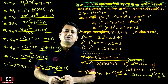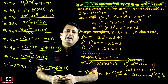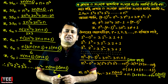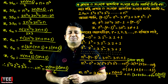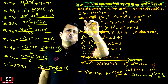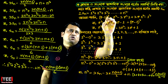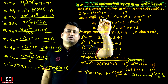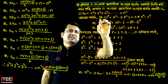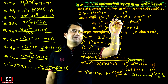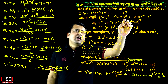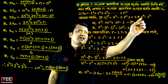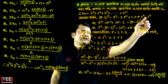We know that a minus b whole cube equals a cube minus 3a squared b plus 3ab squared minus b cube. Therefore, a minus 1 whole cube equals a cube minus 3a squared into 1 plus 3a into 1 squared minus 1 cube.